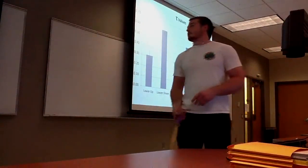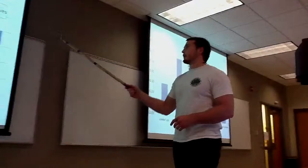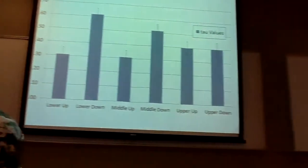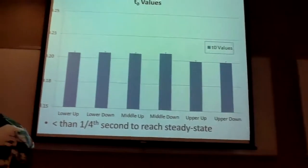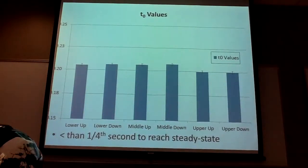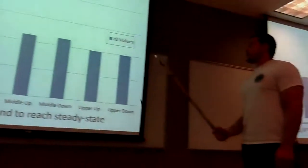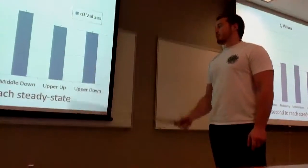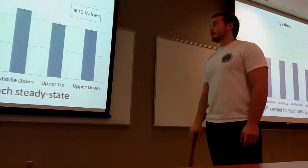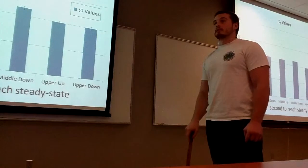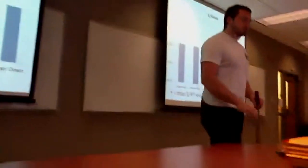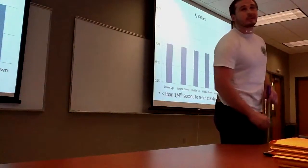The tau values are here. And you can see the error bars associated with them. And our T0 values are here. Our system, in every case, was able to reach steady state in less than one-fourth of a second. That concludes our presentation. Thank you.